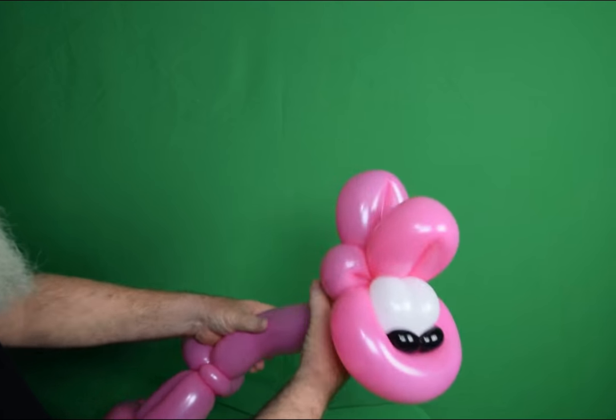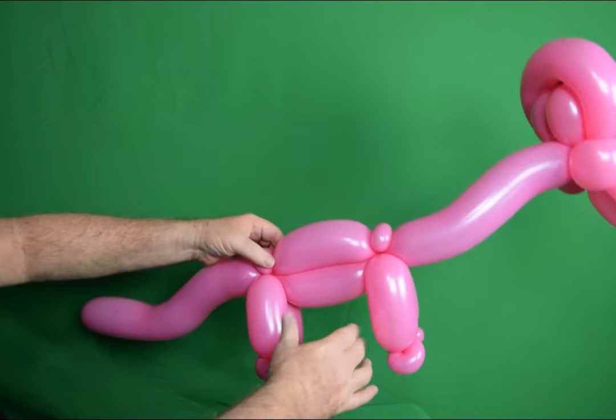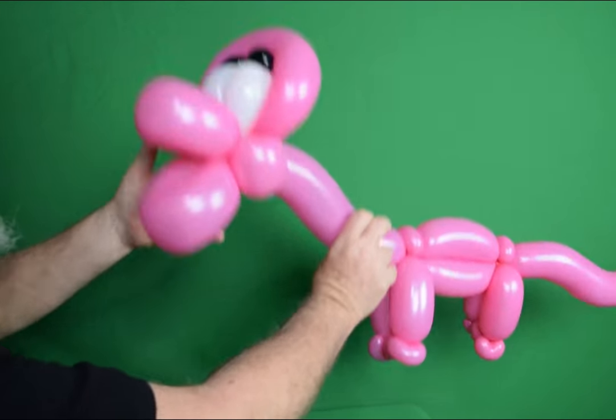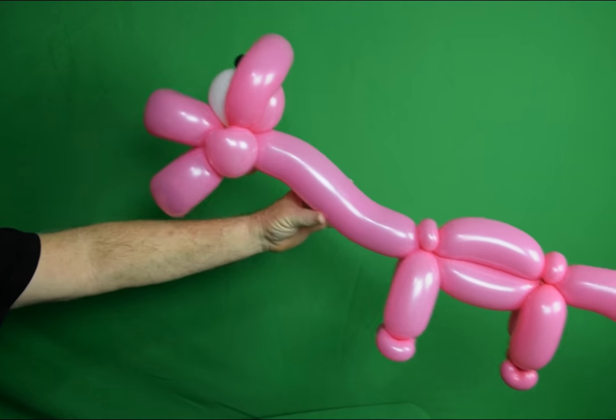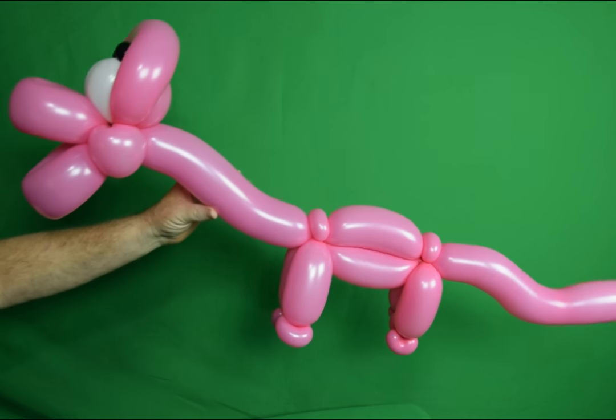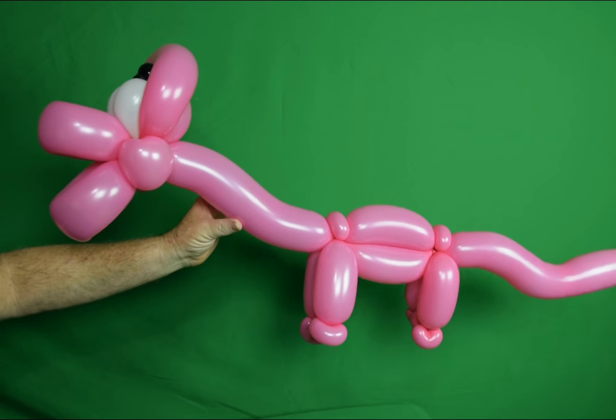Give the tail a little bit of shape. Give the neck a little bit of shape. And there. Really cute. It barely fits in the screen. 360 dinosaur.